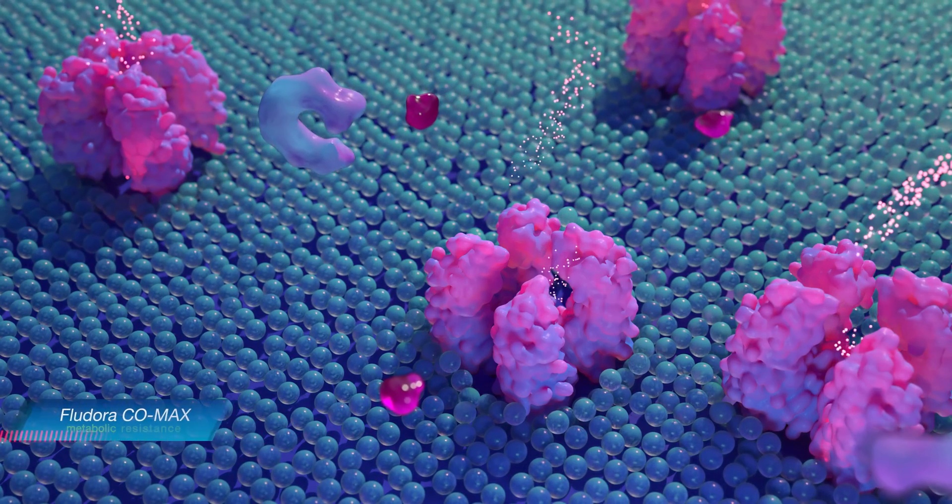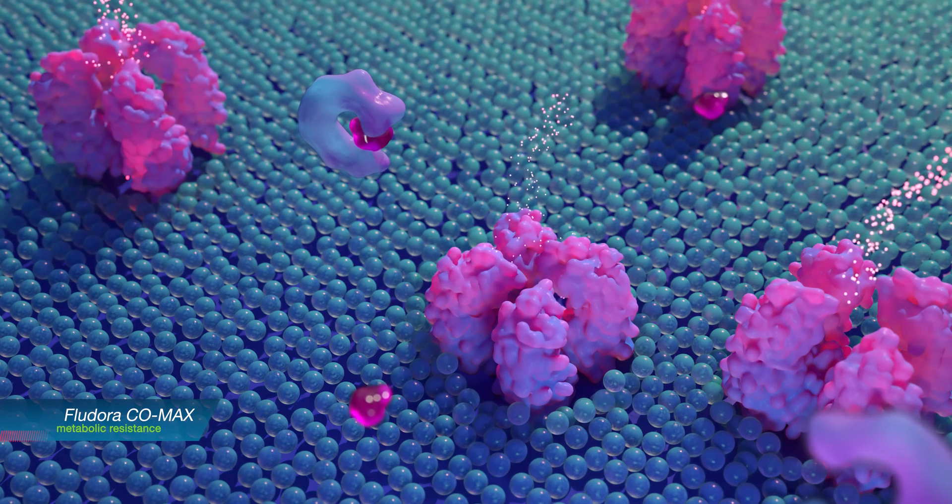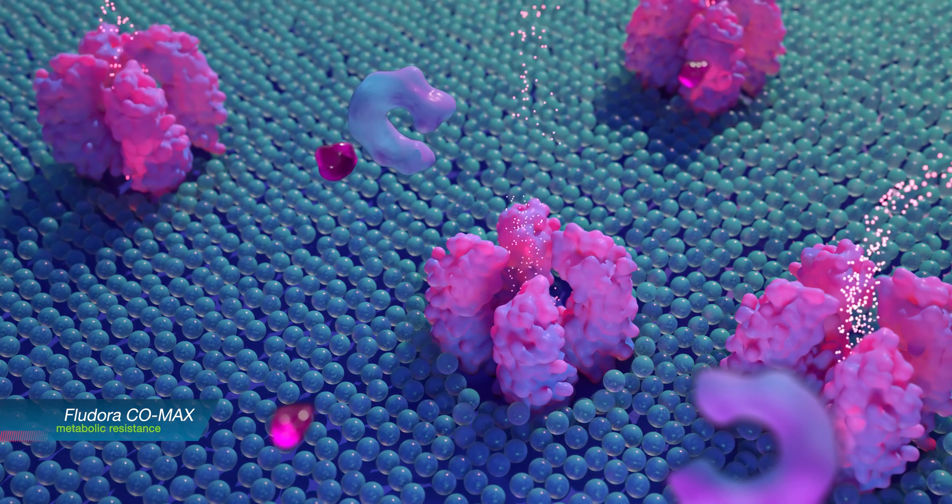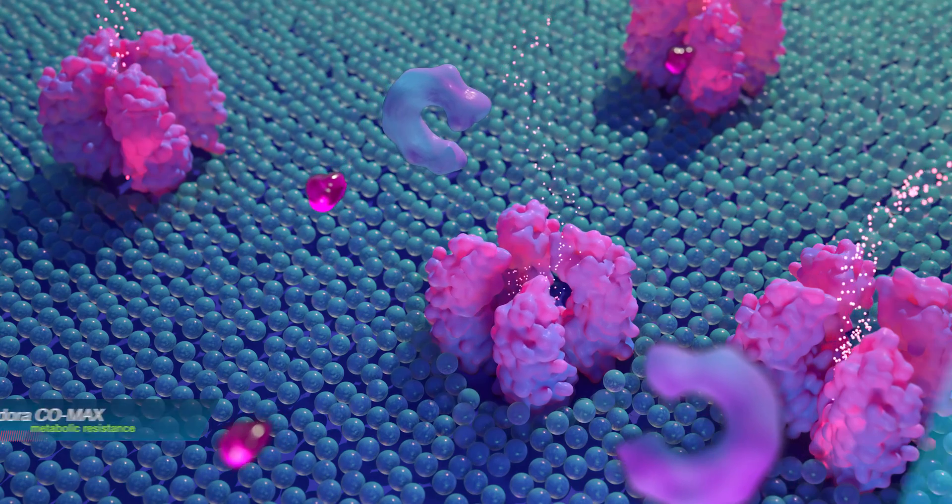Transfluthrin, however, is different to other pyrethroid insecticides. Its unique structure inhibits the binding of enzymes and complicates the development of resistance.